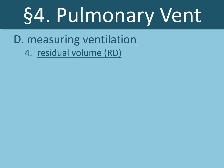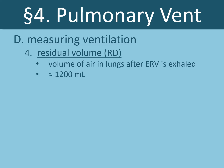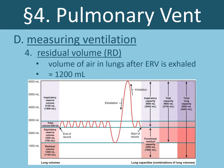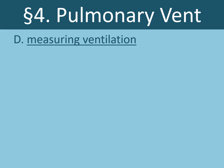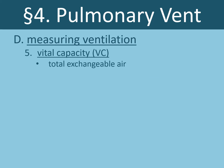Fourth is residual volume — the volume of air that we cannot exhale. It's the amount of air that's always left in the lungs, even after the expiratory reserve volume is evacuated, amounting to about 1200 milliliters. Finally, we have vital capacity, which is the amount of air we can exchange with the atmosphere. It's the sum of the tidal volume, inspiratory reserve volume, and expiratory reserve volume, amounting to about 4000 milliliters.